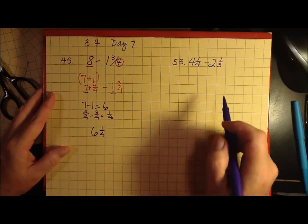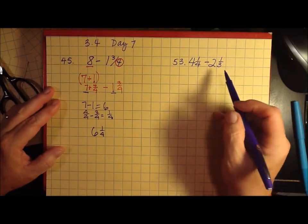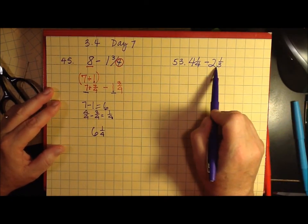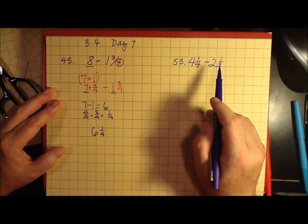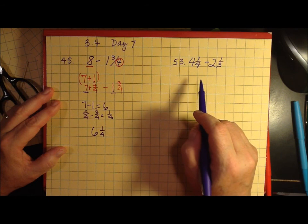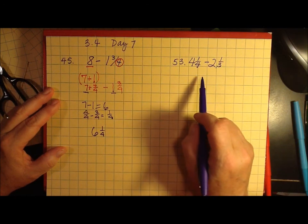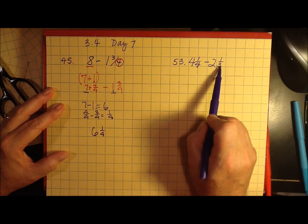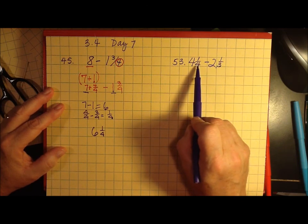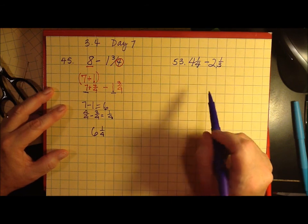Here we have another subtraction problem. These are both mixed numbers. One is in fourths and one is in thirds. One of the things I'd like to do before I work with the whole numbers for this is to get the fractions to be the same. Four is not a multiple of three, and three is not a multiple of four, but they do have 12 in common.